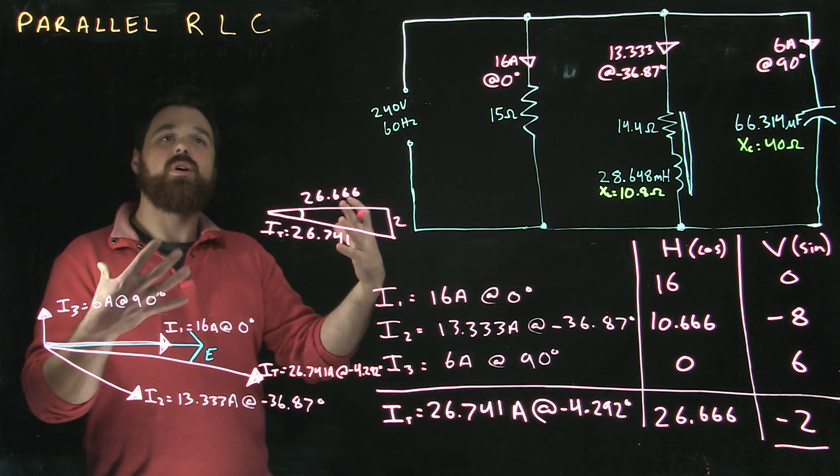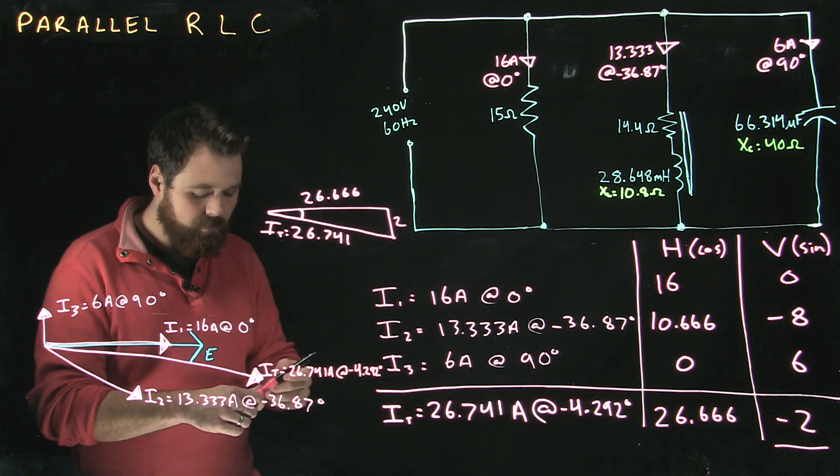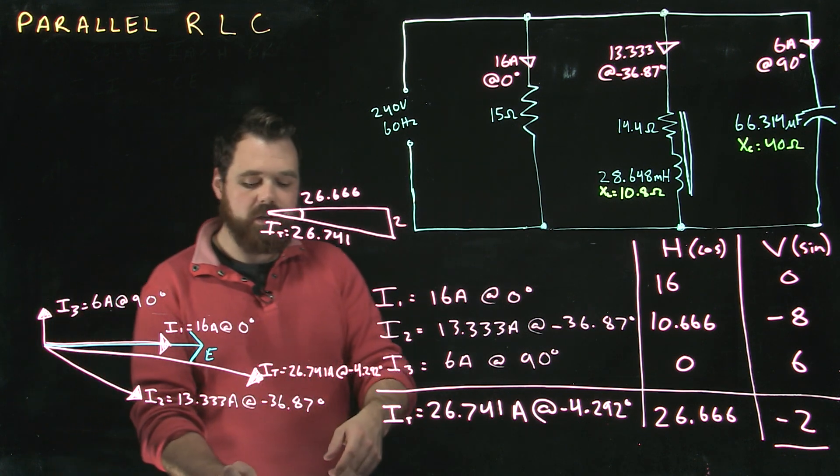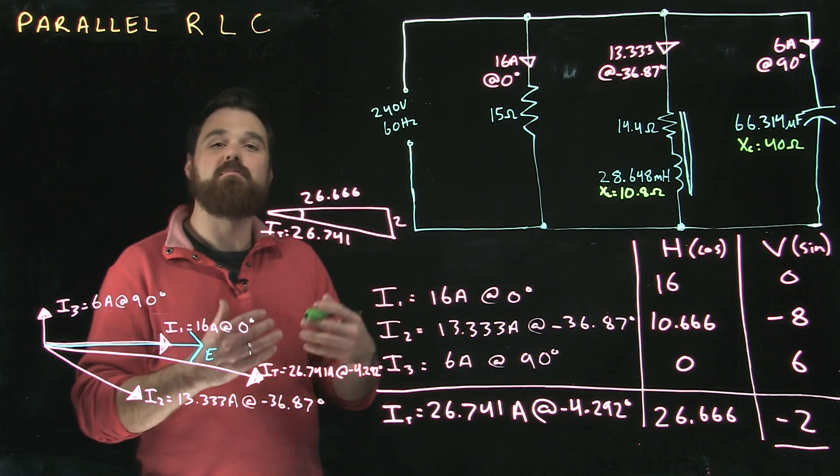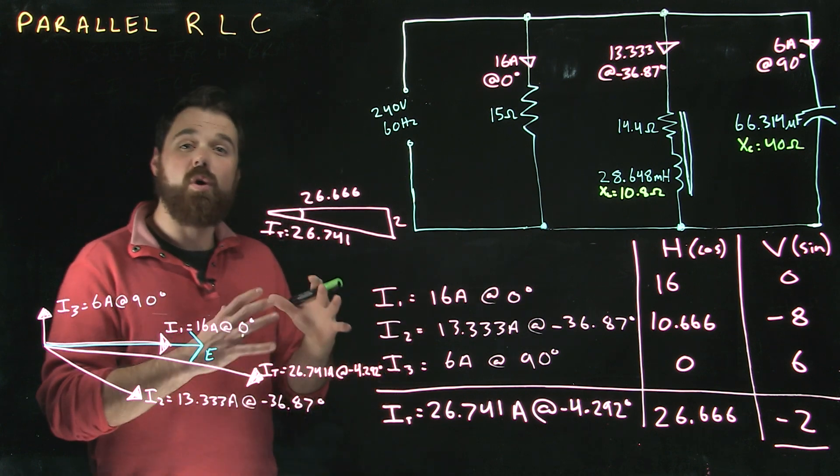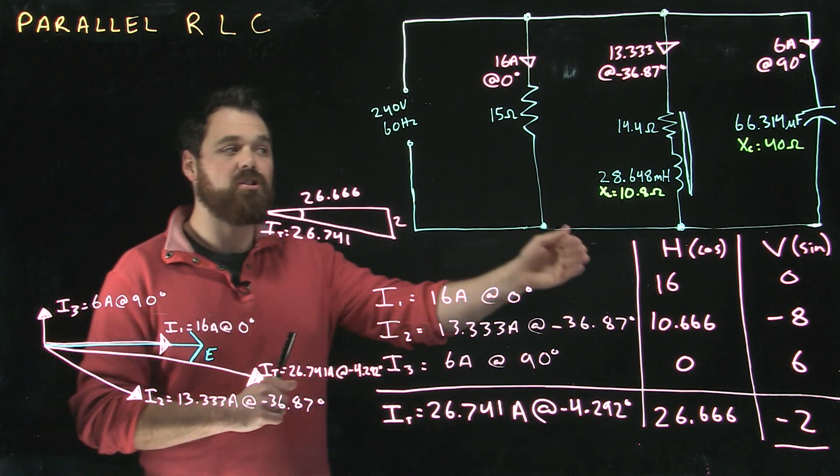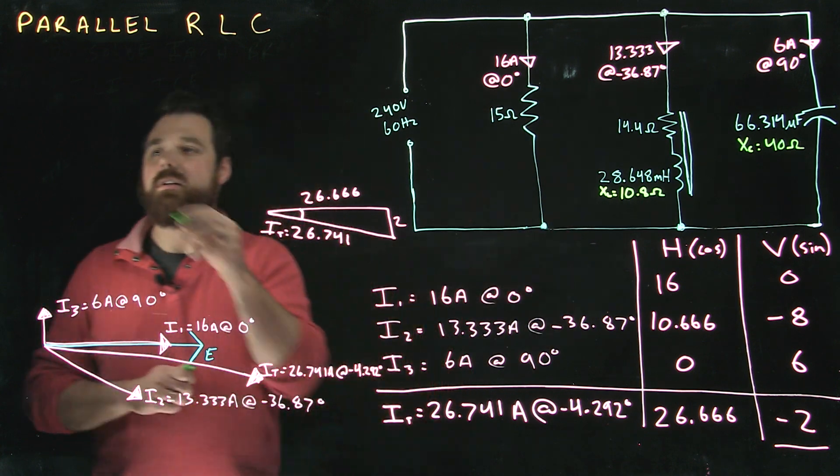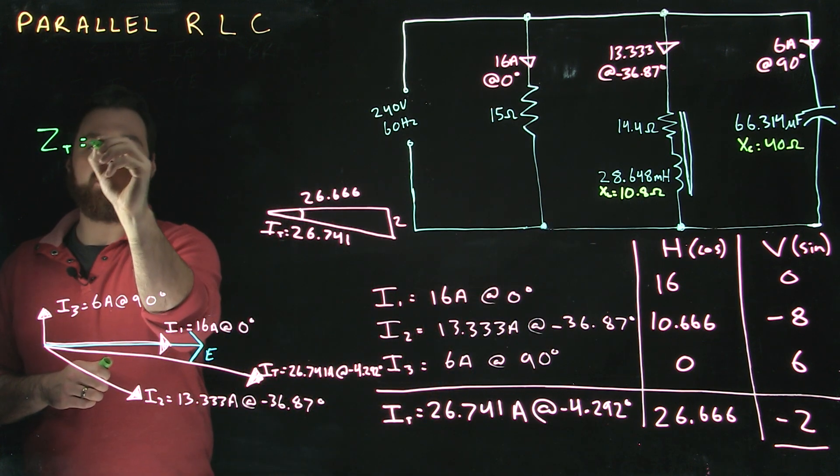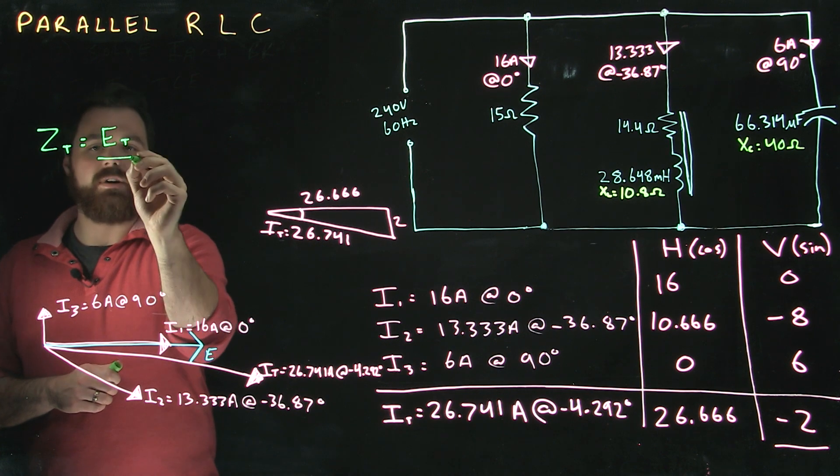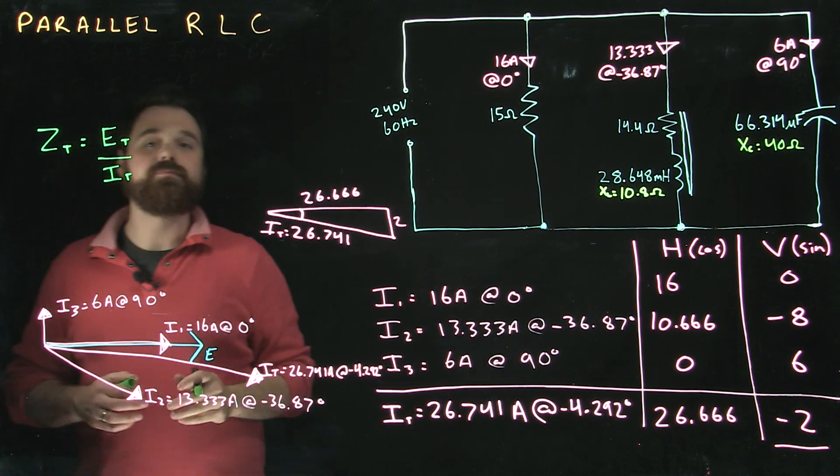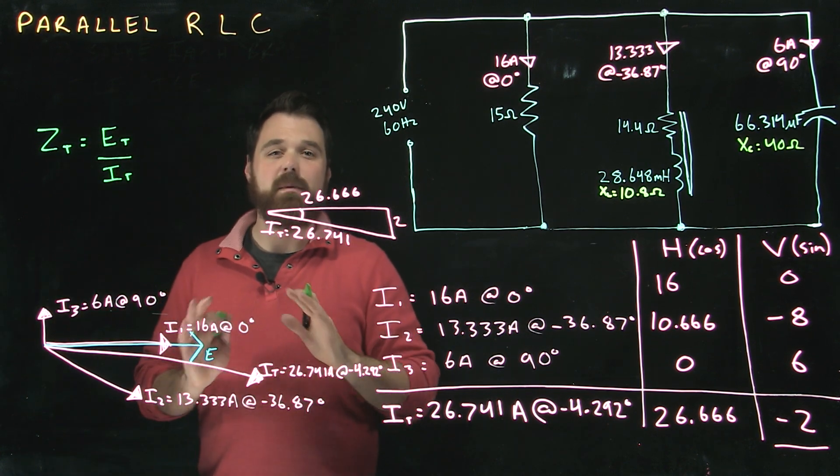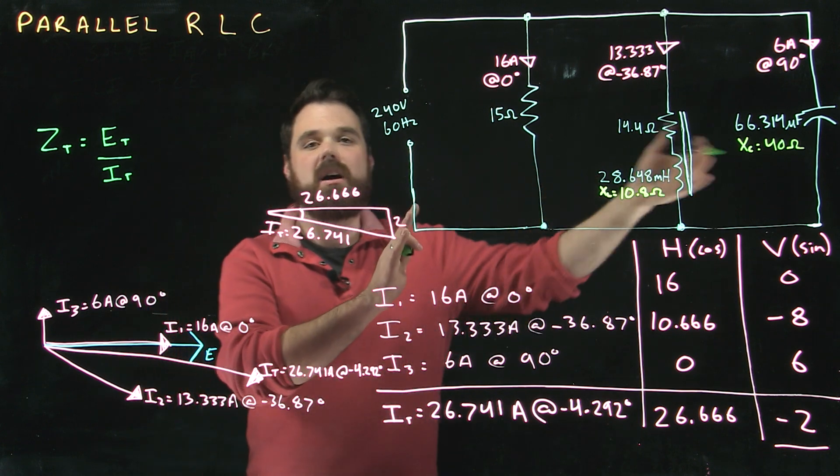So that's what we do to solve for IT in this circuit. Now the last thing I want to talk about really quickly is the total impedance for a circuit. The only way we're going to solve for total impedance in a parallel circuit is by going ZT equals ET divided by IT. We are not using any impedance diagrams for the entire circuit in parallel.